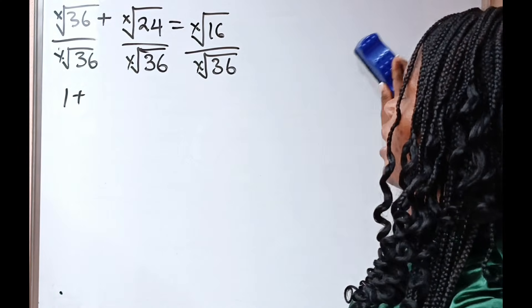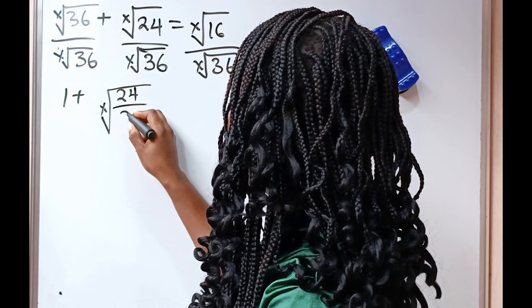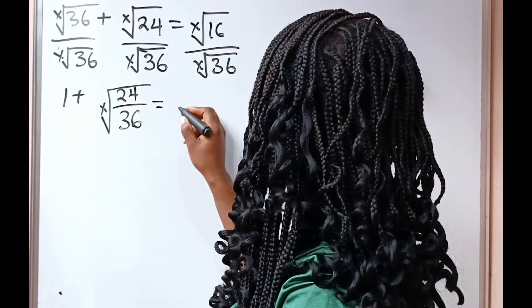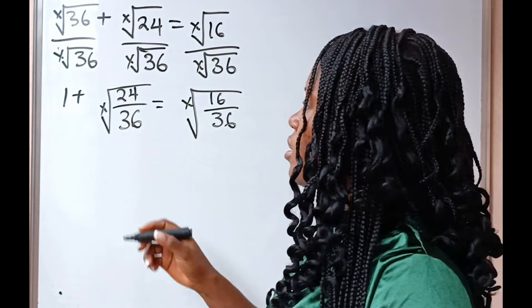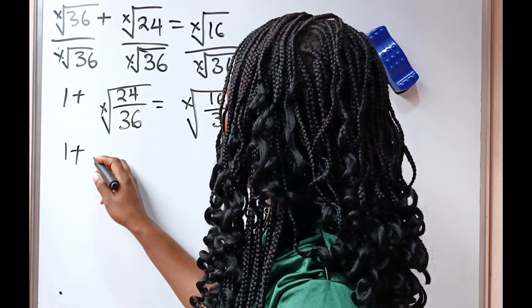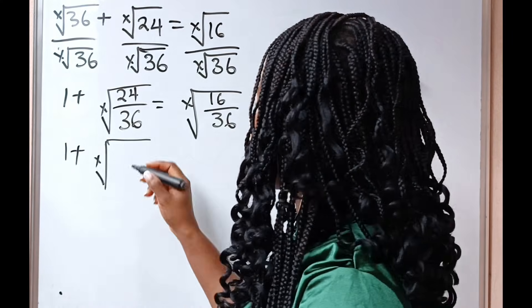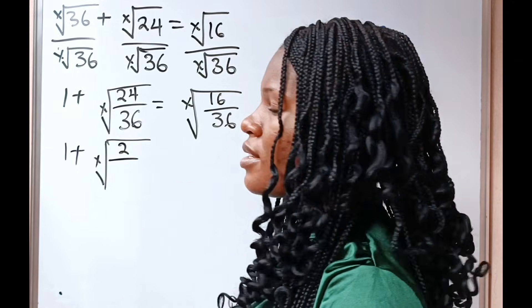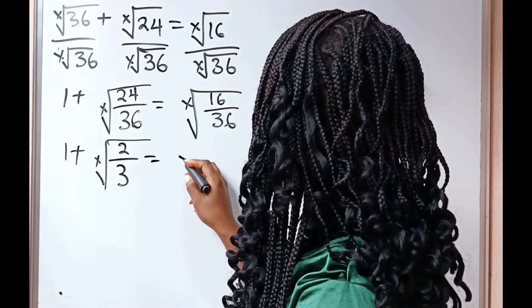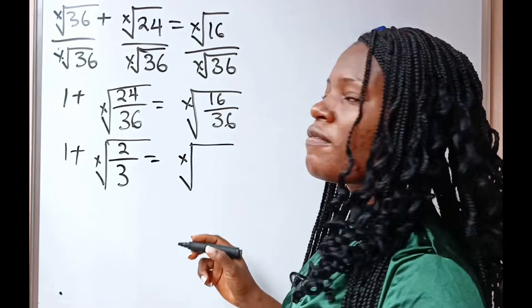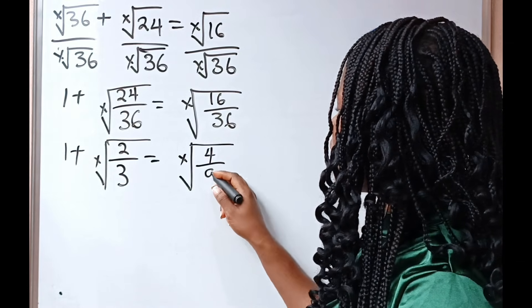So that means we can write this as x-root of 24 divided by 36, is equal to x-root of 16 divided by 36. Now we have 1 plus — when 24 is divided by 12, we have 2. So we have 2 over 36 divided by 12, we have 3, is equal to x-root of — when 4 divides 16, we have 4; 36 divided by 4 gives us 9.